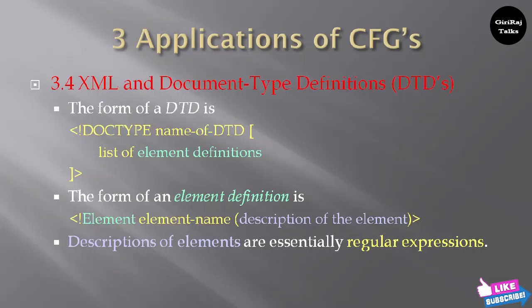When creating an XML document, you first mention the DOCTYPE, which follows a syntactic manner. You specify whether it is version 1.1 or 1.0, UTF encoding, or other options. This DOCTYPE declaration also follows context-free grammar. When creating an XML document, you must mention DOCTYPE.